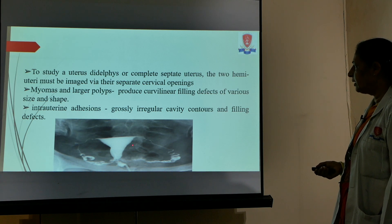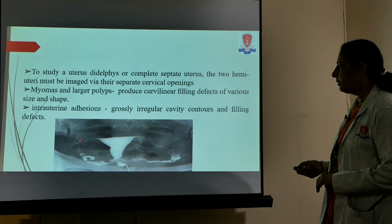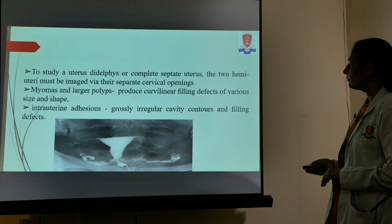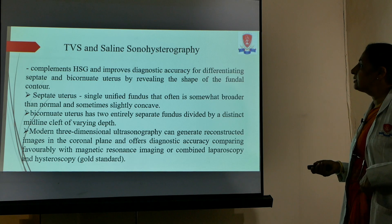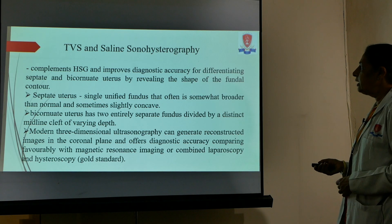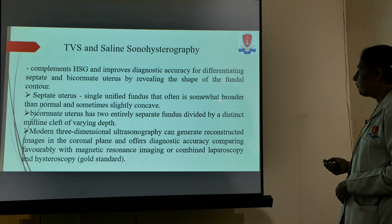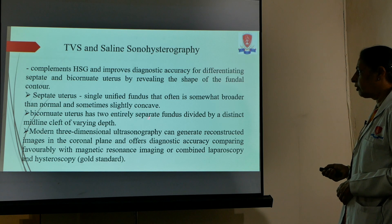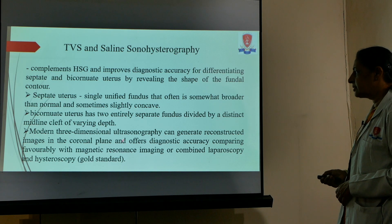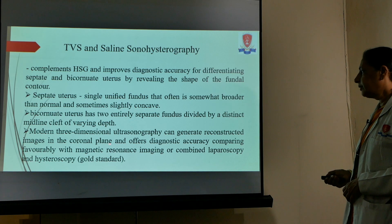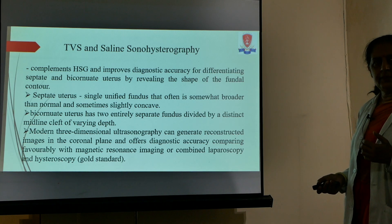On HSG, intramural myomas appear as irregularities in the cavity, adhesions appear as filling defects or cavity breakups, and blocked tubes will show no dye beyond the level of blockage. Sonography complements HSG and improves diagnostic accuracy in differentiating between a septate and a bicornuate uterus; a septate uterus shows a single unified fundus that is somewhat broader, while a bicornuate uterus has two entirely different cavities. Three-dimensional ultrasonography can generate reconstructed pictures and is best for these diagnoses. Hysteroscopy is the gold standard as it can be both operative and diagnostic in the same sitting.